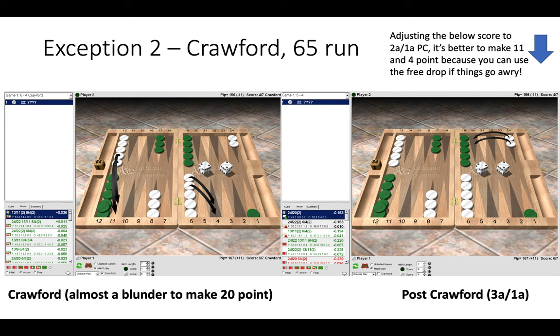Now choosing the correct opening response at post-Crawford and Crawford can be difficult and there are many variations to this. You can go on to XG and you can experiment with opening responses. But here you can see that after the opponent has run with 6-5, at Crawford on the left, it's better to make the 11 and the 4 point. But on the right, at post-Crawford, it's better to make the 20 point.